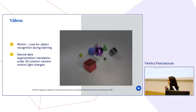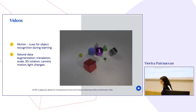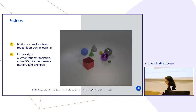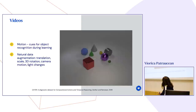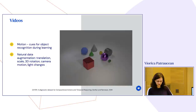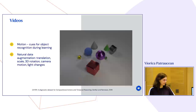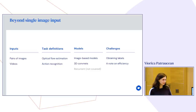Now we'll cover what's available when we have pairs of images or video as input, looking at optical flow estimation and action recognition, and discuss the challenges. Let's start with pairs of images and optical flow estimation. Optical flow is about tracking motion between images: given a pair of images, for each pixel in image one, where did that pixel end up in image two? The output is a dense map — same resolution as the input — encoding the 2D translation (displacement in X and Y) for each pixel location.